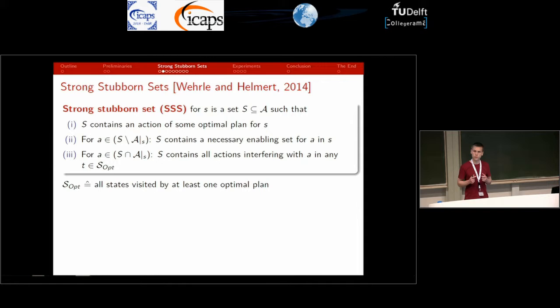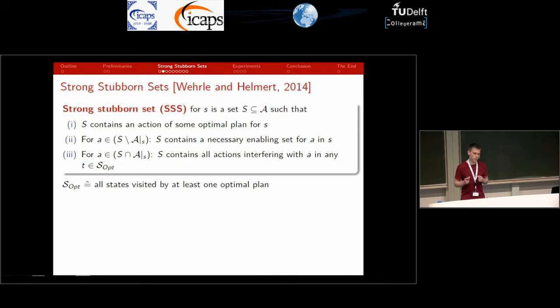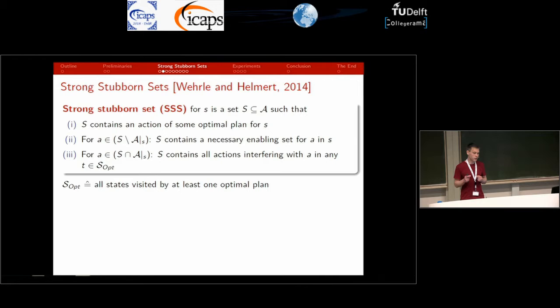Strong stubborn sets pose three requirements on a set of actions — these conditions are mainly of theoretical interest, and I will show how they can be computed in practice in a couple of slides. Condition one requires that the strong stubborn set contains an action of some optimal plan. Condition two requires that for every action in the set that is not applicable in the state, the stubborn set contains a necessary enabling set for that action. Condition three requires that for every applicable action in the set, the stubborn set contains all actions that interfere with it in any state visited along some optimal plan.